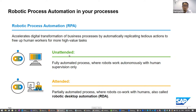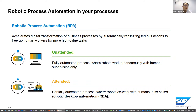The unattended mode lets you automate your process entirely, meaning the robot will do all actions for you — no need for a human to supervise the actions done by the bot. Then we have the attended mode, which is used to automate processes where the robot can work with the human. For example, if the robot does not know what to do with some data, the human can help the robot make decisions.